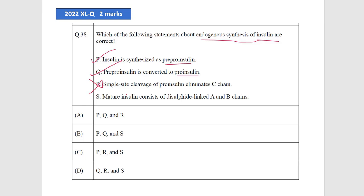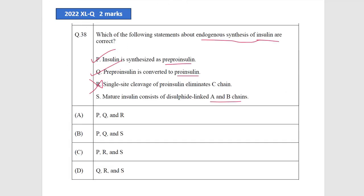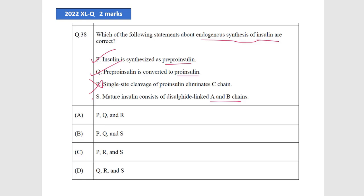And mature insulin consists of disulfide-linked A and B chains, which is here: A chain and B chain. So P, Q, and S are correct. We have to choose the sequence that is correct. P, Q, and S are correct. Option B is correct.